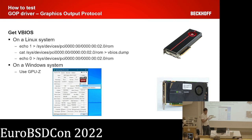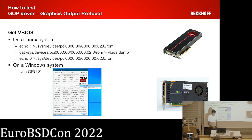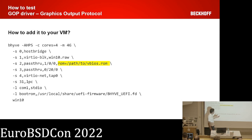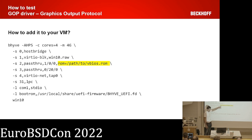There are also some video BIOS files available online, but take care to use the same version as on your host system because a version mismatch between host and guest can cause trouble. Adding the ROM is relatively simple — as shown in the demo, you just add the ROM option and append the path to your GOP driver file.